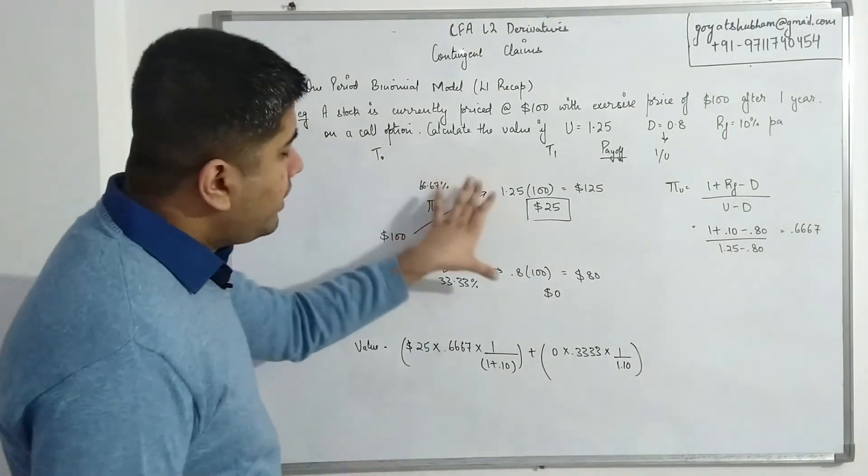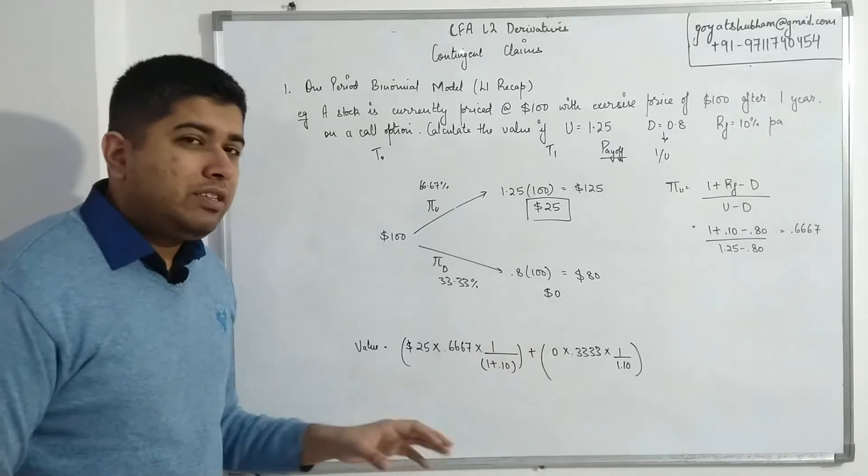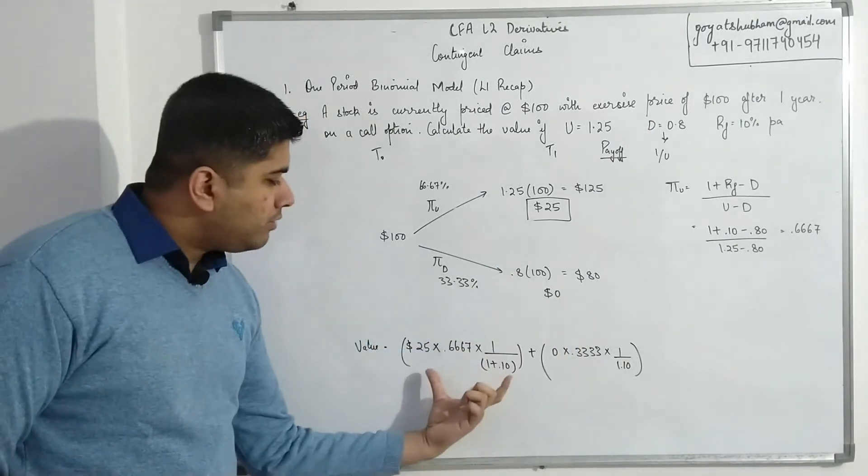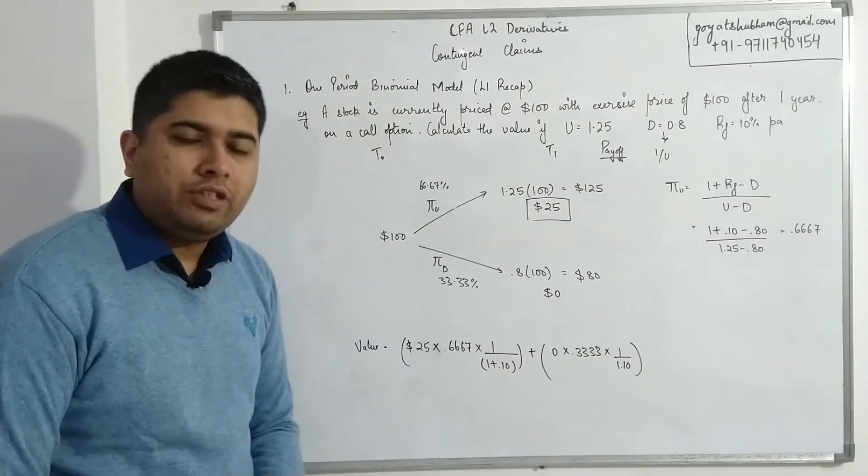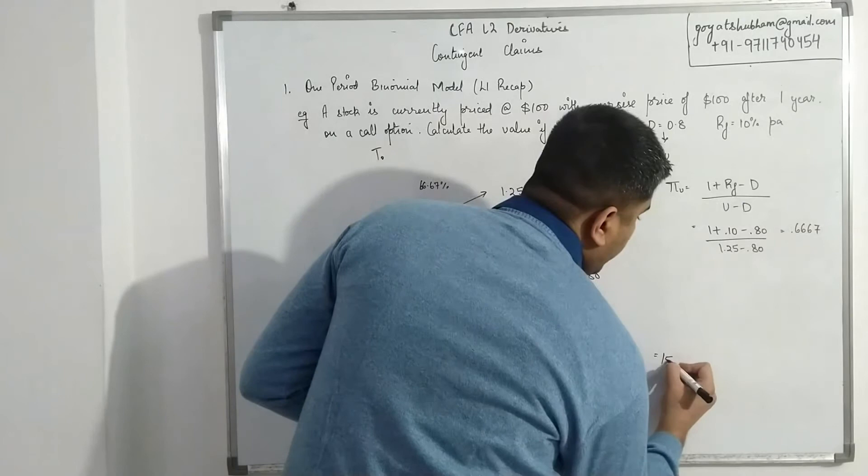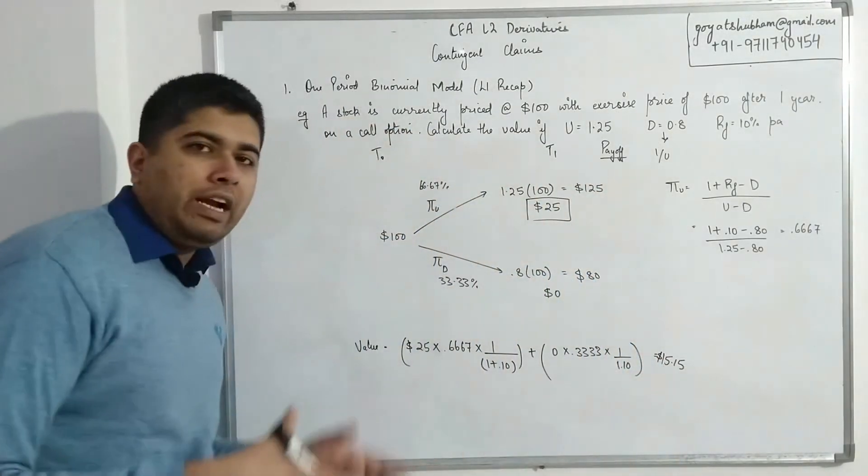Normally if you can figure out from the binomial itself that one of the cash flows is 0, my suggestion would be don't even bother writing this part of the equation in the exam. Save time and directly solve this part.